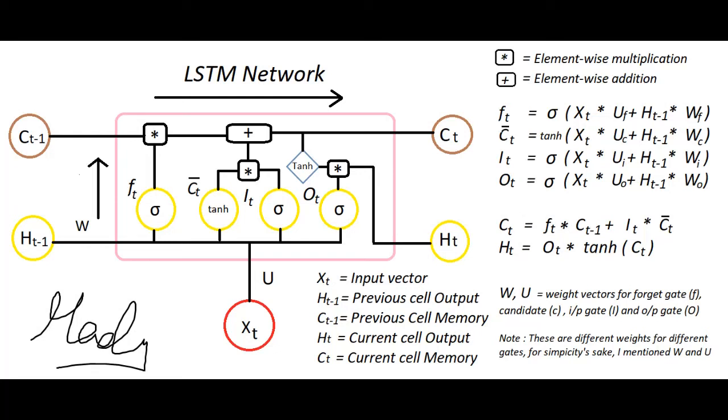Long short-term memory networks work very well on a wide range of problems and are now widely used. They were introduced in 1997 by Hochreiter and Schmidhuber, and were refined and popularized by many subsequent researchers.